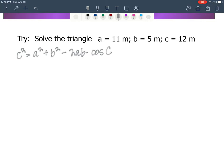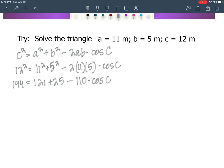So here we've got C squared, that's going to be 12 squared, equals 11 squared plus 5 squared minus 2 times 11 times 5 times the cosine of C. Now when the numbers are smaller like this, I just put 144 equals 121 plus 25 minus 55 twice is 110 times the cosine of C.